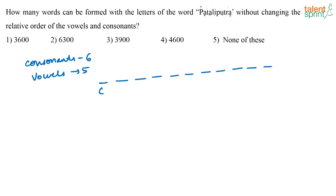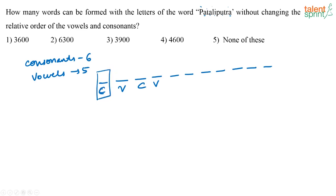The first place is occupied by a consonant, the second place is occupied by a vowel, the third place is occupied by a consonant, the fourth place is occupied by a vowel. What they are trying to say is each position should be occupied only by its type — the position occupied by a consonant should only be occupied by a consonant, and the position occupied by a vowel should only be occupied by a vowel. We cannot change that.